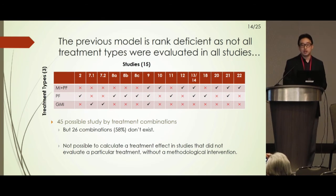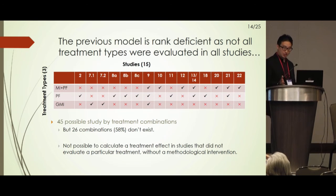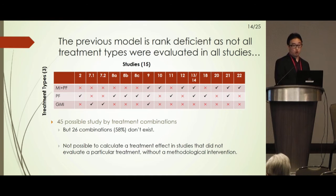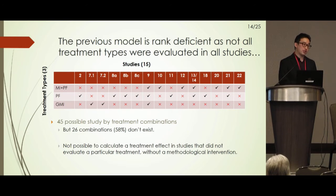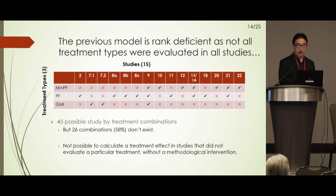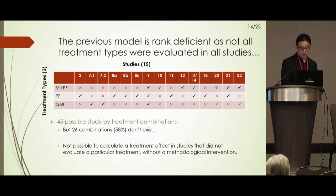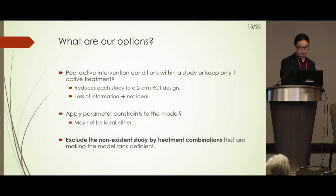There's a hitch: the previous model is rank deficient, since not all treatment types were evaluated across all studies. In this collection of 15 studies with three potential treatments — motivational interviewing with personalized feedback, personalized feedback only, and group MI — over half of those combinations were not evaluated. This means you cannot calculate a random slope for a study that did not evaluate a particular treatment, so we need to think about how to deal with this methodologically.